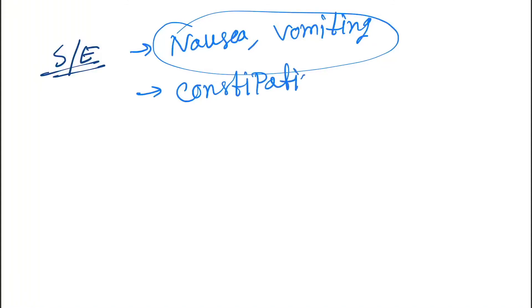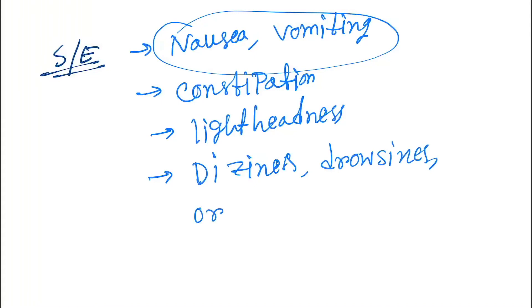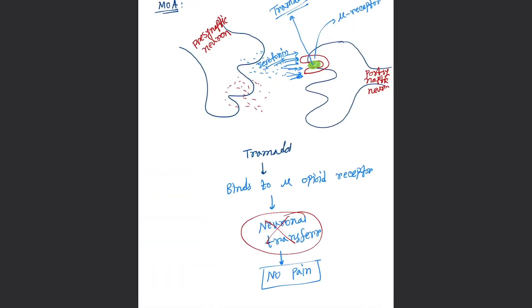Side effects are: nausea, vomiting—universal side effects of most drugs—next constipation, next lightheadedness, next dizziness, drowsiness, or headache.